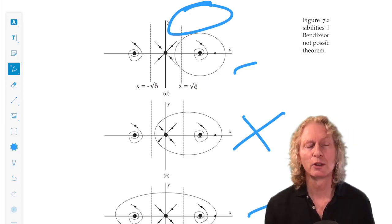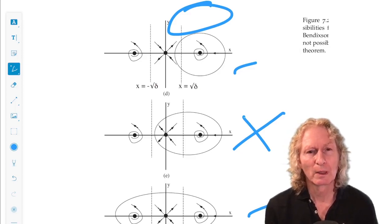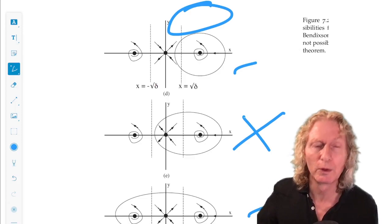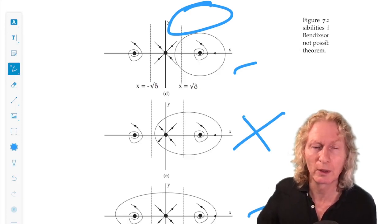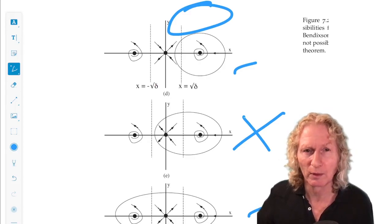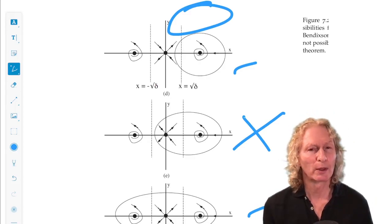Okay, so this shows you how these two techniques, Bendixson's criteria and the index theorem, can be used together to discover possibilities for fixed points. Sorry, for the phase portraits that involve periodic orbits and fixed points.